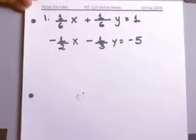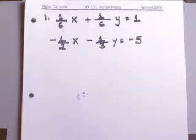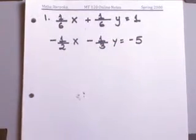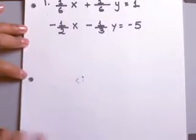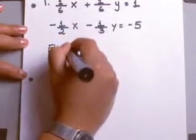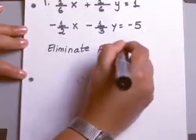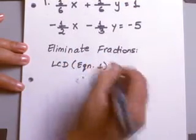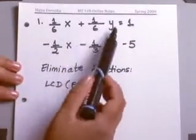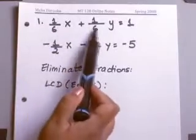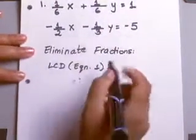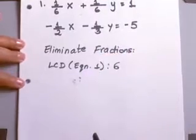As you can see, you have 1/6 x plus 1/6 y equals 1, and then negative 1/2 x minus 1/3 y equals negative 5. Each one of these coefficients are fractions, so let's eliminate them. To do that, we need to find a common denominator. For the first equation, both denominators are 6, so the least common denominator is 6.